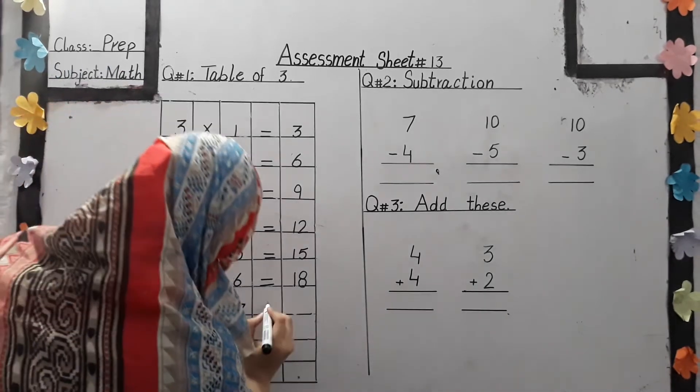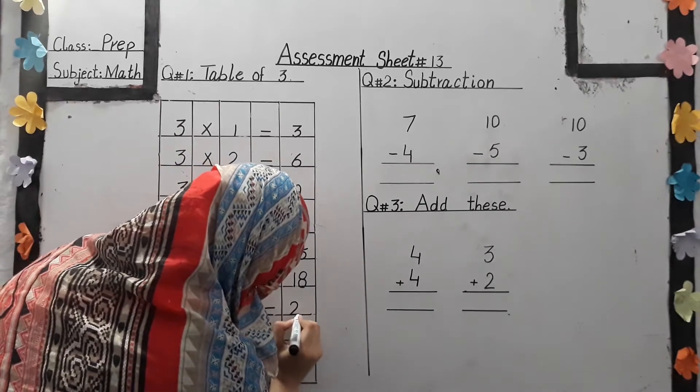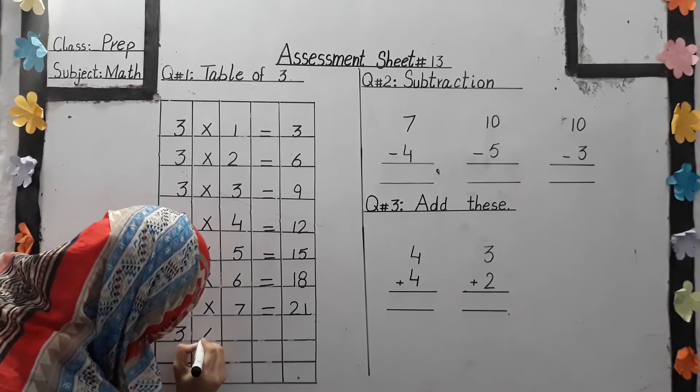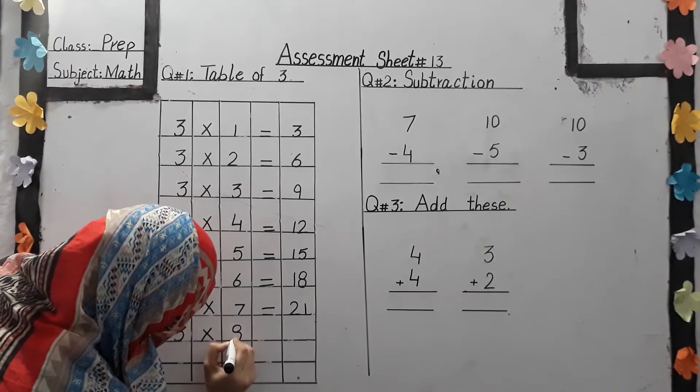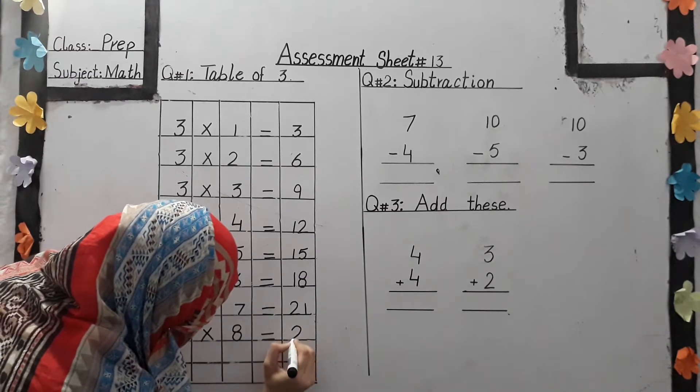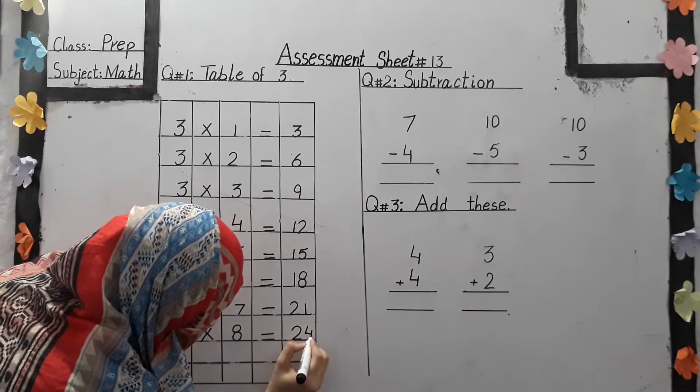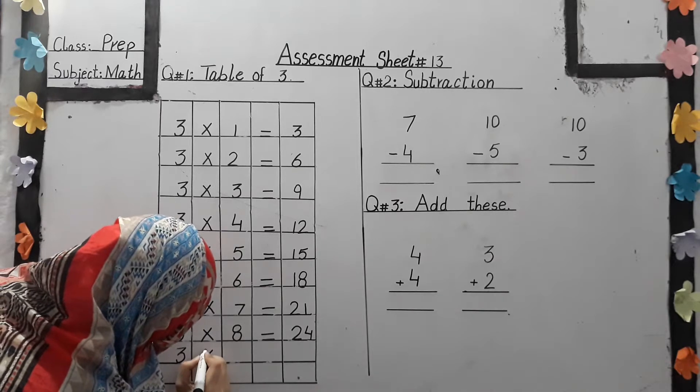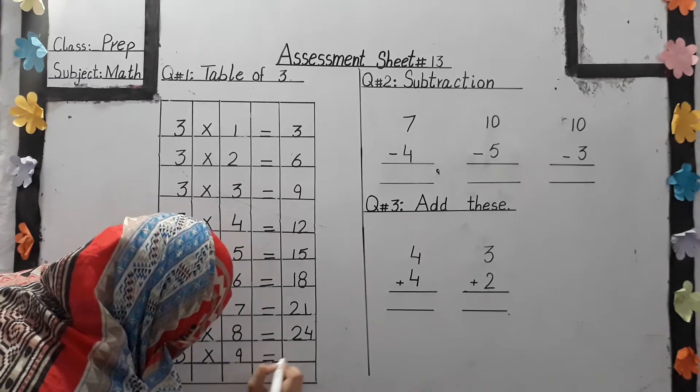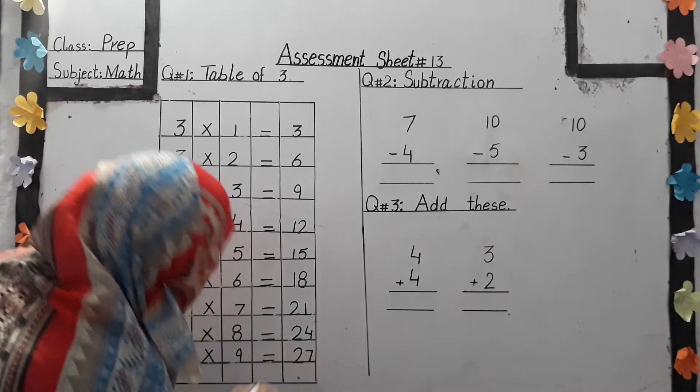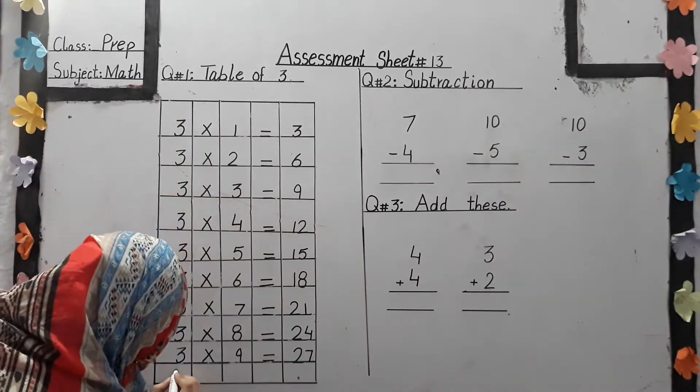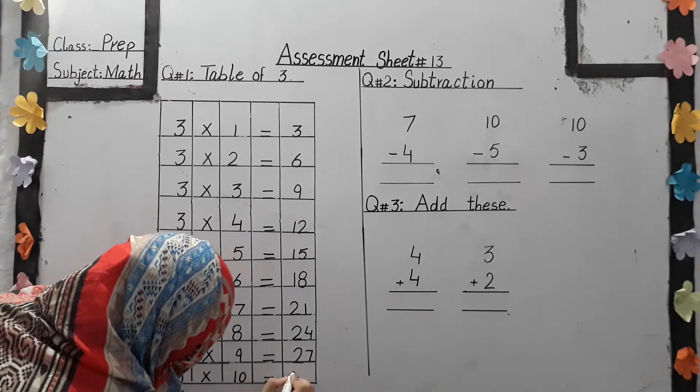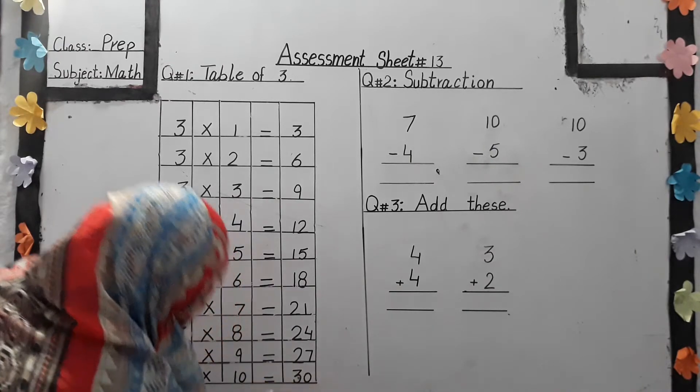3 sixes are 18. 3 sevens are 21. 3 eights are 24. 3 nines are 27. 3 tens are 30.